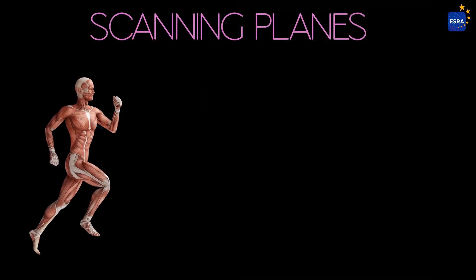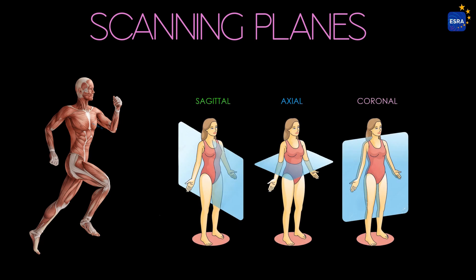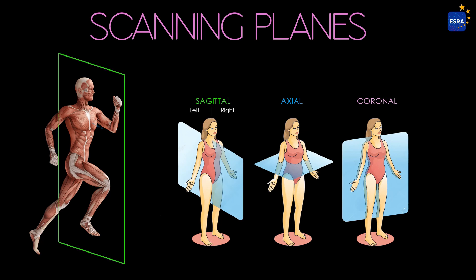Understanding the different anatomical planes of exploration is essential for the accurate interpretation of ultrasound images. The sagittal plane is a longitudinal plane that runs through the midline, dividing the body into two halves — right and left. It is a vertical plane perpendicular to the ground.